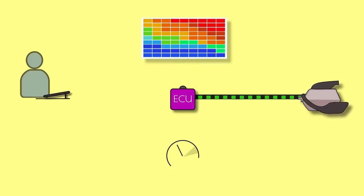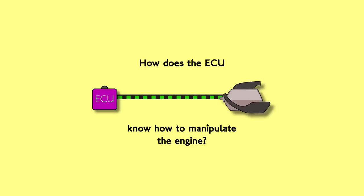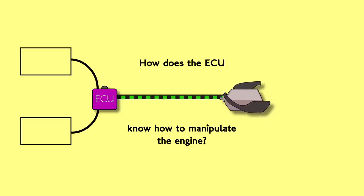So does the ECU then get the engine to deliver the torque demanded by the driver? Well, it uses a number of other maps to deliver inputs into the actual mechanics of the engine to deliver the demanded torque.